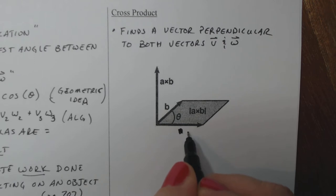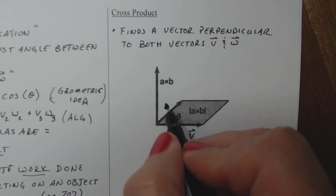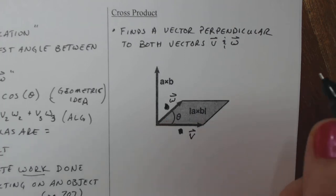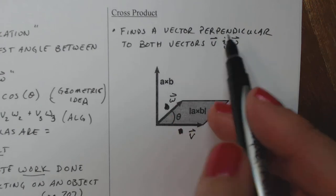So instead of putting A there, I'm going to put the vector V, and this is my vector W, and there's some angle theta between it. And theta isn't necessarily 90 degrees. It's just some angle that the two vectors have between them.